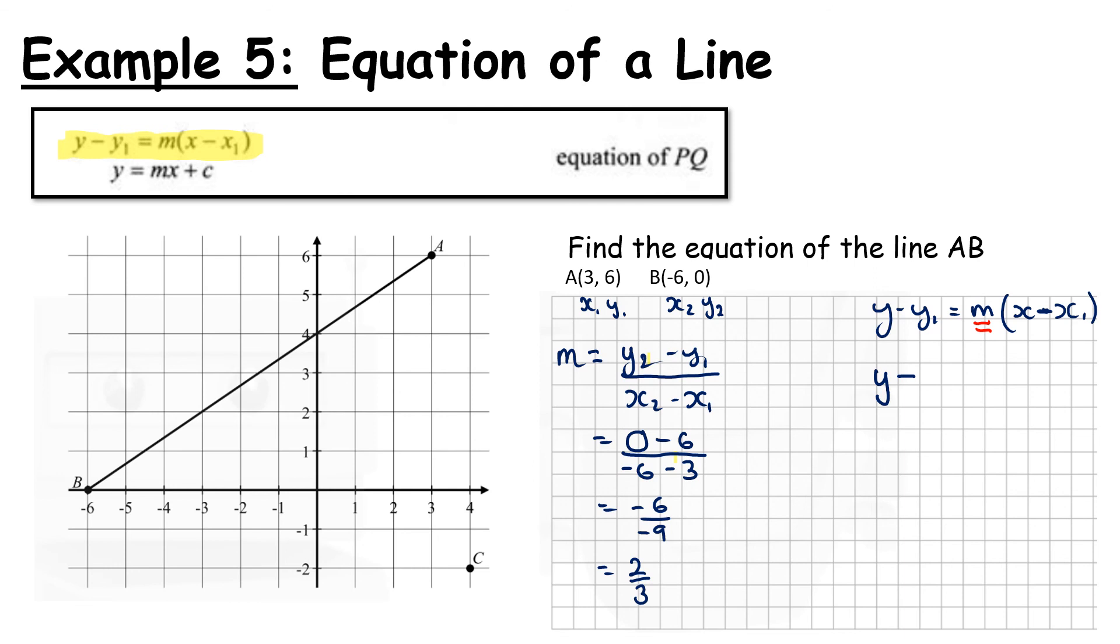Y minus Y1 is 6 equals 2 over 3 bracket X minus 3 which is X1. Now because of the way that slope is a fraction, I'm going to multiply both sides by the common denominator which is 3. They cancel.